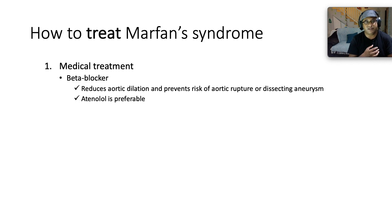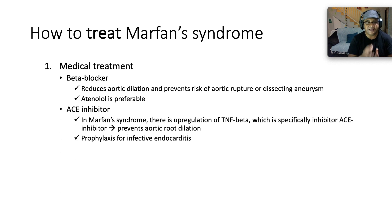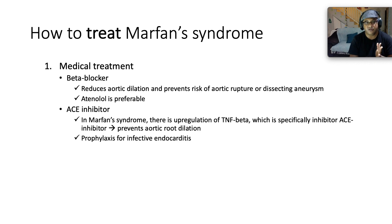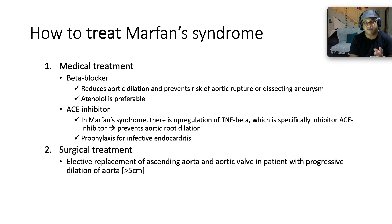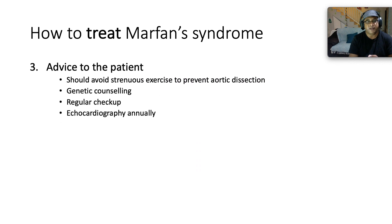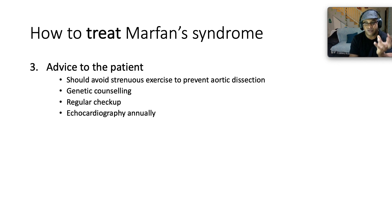How are we going to treat Marfan's syndrome? For medical treatment: a beta blocker — preferably atenolol — is a good idea because it reduces aortic dilatation and prevents the risk of aortic rupture or dissecting aneurysm. An ACE inhibitor is also used because in Marfan's syndrome there is upregulation of transforming growth factor beta, which is specifically inhibited by an ACE inhibitor, once again preventing aortic root dilatation. We also need to include prophylaxis for infective endocarditis. From a surgical standpoint, elective replacement of the aortic valve is good practice in patients with progressive dilatation of the aorta — if it's above five centimeters, surgical treatment is preferred. Advice to the patient is critical: avoid strenuous exercise to prevent aortic dissection, genetic counseling regarding the autosomal dominant pattern of inheritance, and regular checkup with an annual echocardiogram to monitor aortic root dilation.